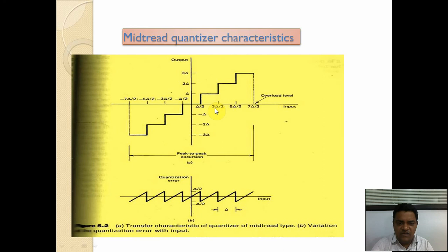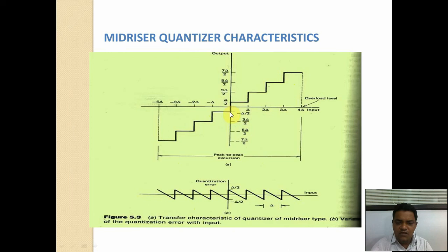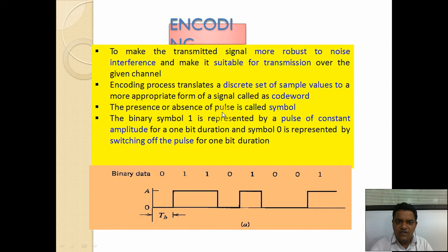In the mid-riser type of quantization, the transfer characteristics are the opposite of mid-tread. The decision levels are at ±δ/2, ±2δ/2, and the step size δ is constant. The representation levels and decision levels are swapped compared to mid-tread. In both types, the step size delta remains constant throughout the uniform quantization.